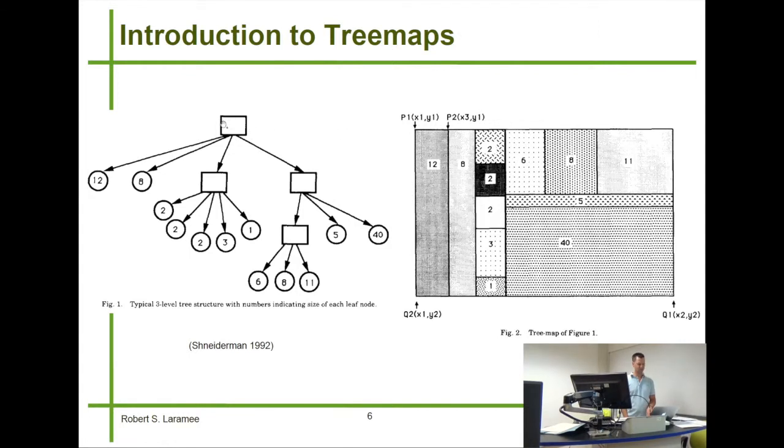And that root node is subdivided into one, two, three, four different rectangles on the treemap. This is a leaf node. So, these are leaf nodes, meaning they have no children. And these are internal nodes, meaning they have children.